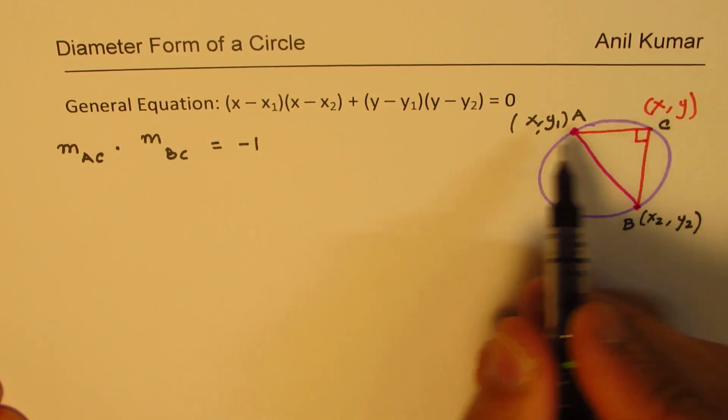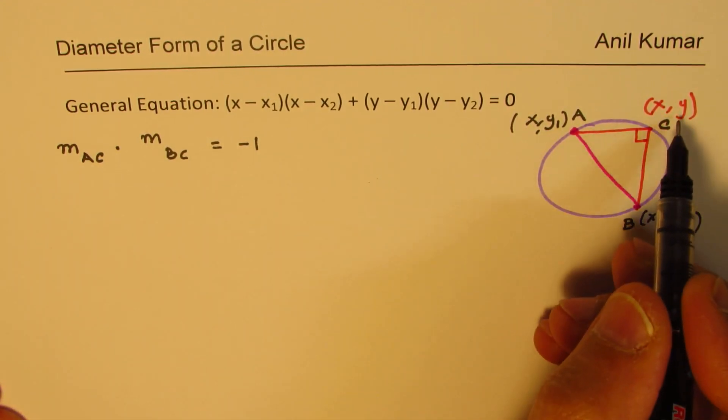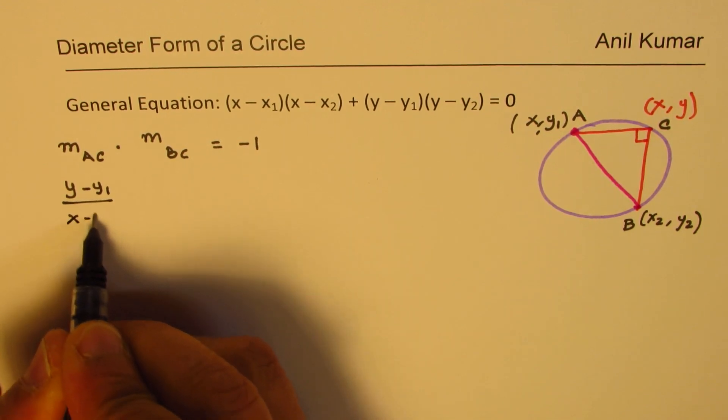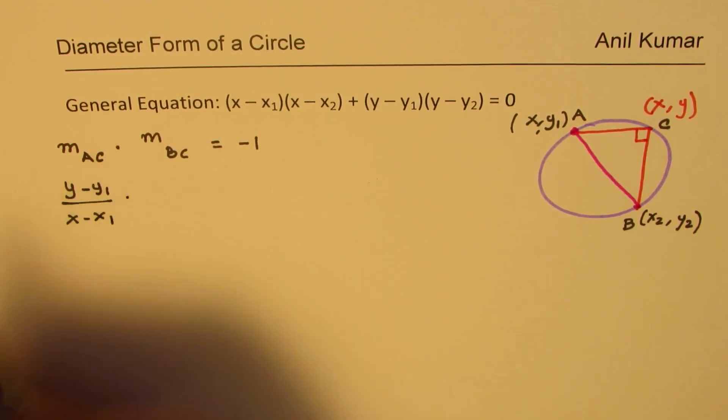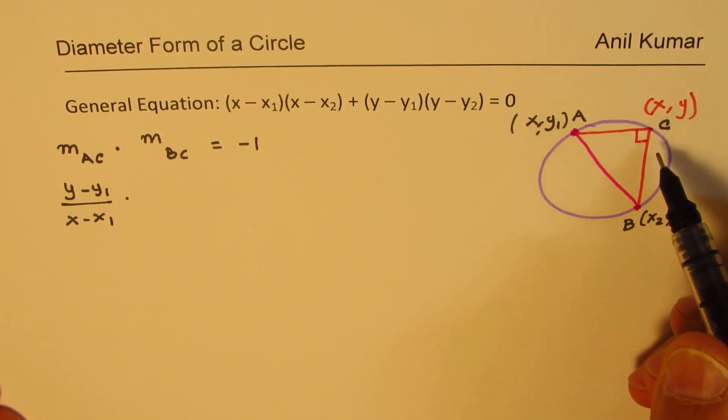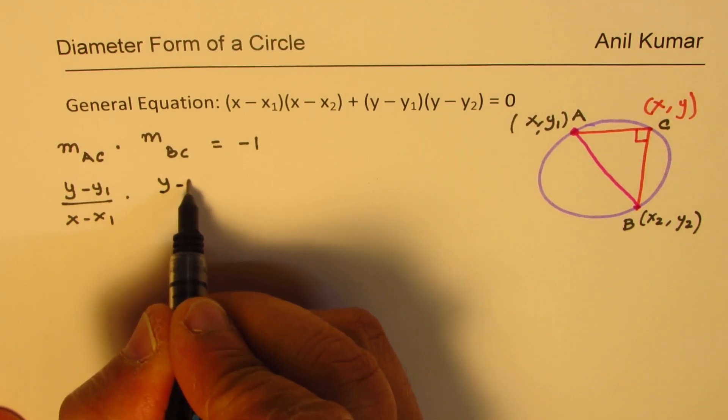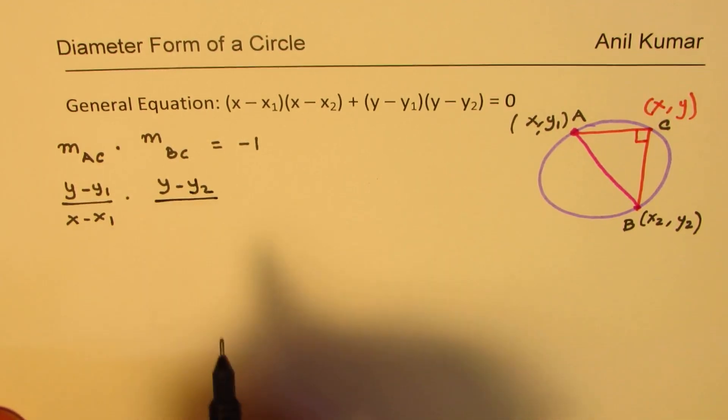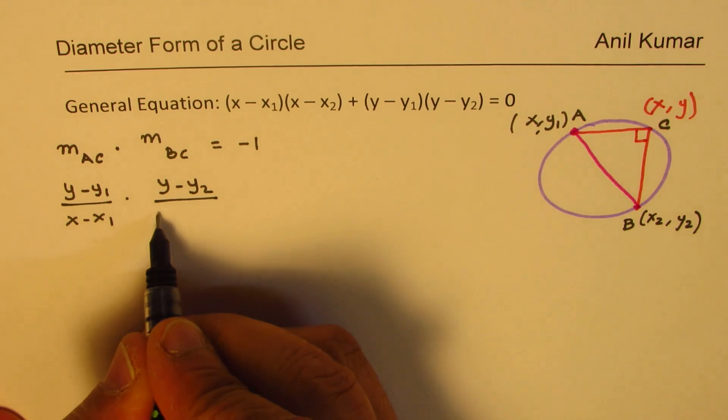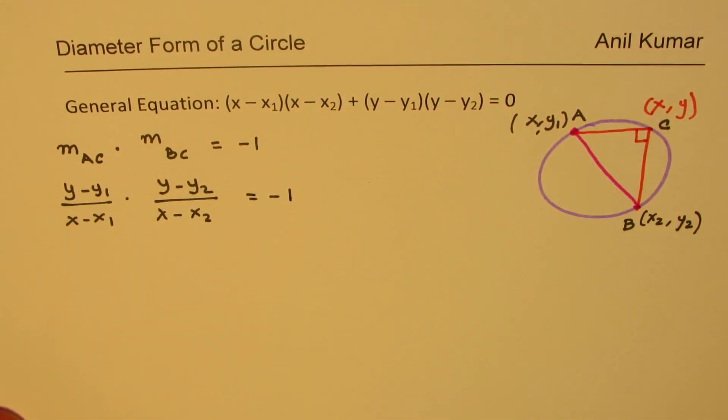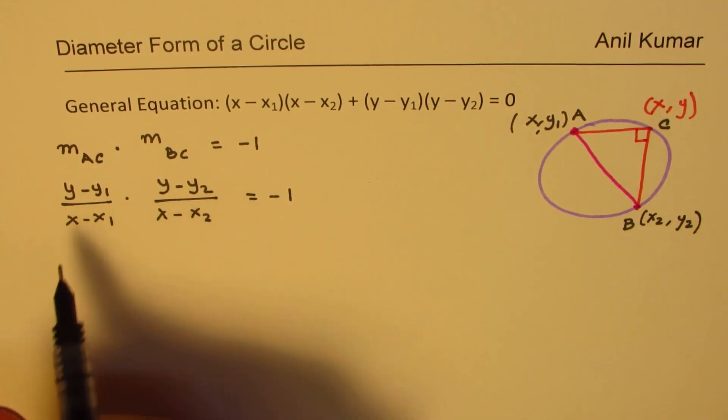Now this important concept relates to the given equation. Now what is this slope A to C? Well A to C will be x minus x1 in the denominator and y minus y1 in the numerator. So the slope is (y minus y1) over (x minus x1). So that is the slope of AC. What is the slope for BC? Well that would be (y minus y2) over (x minus x2) and that should be equal to negative 1.